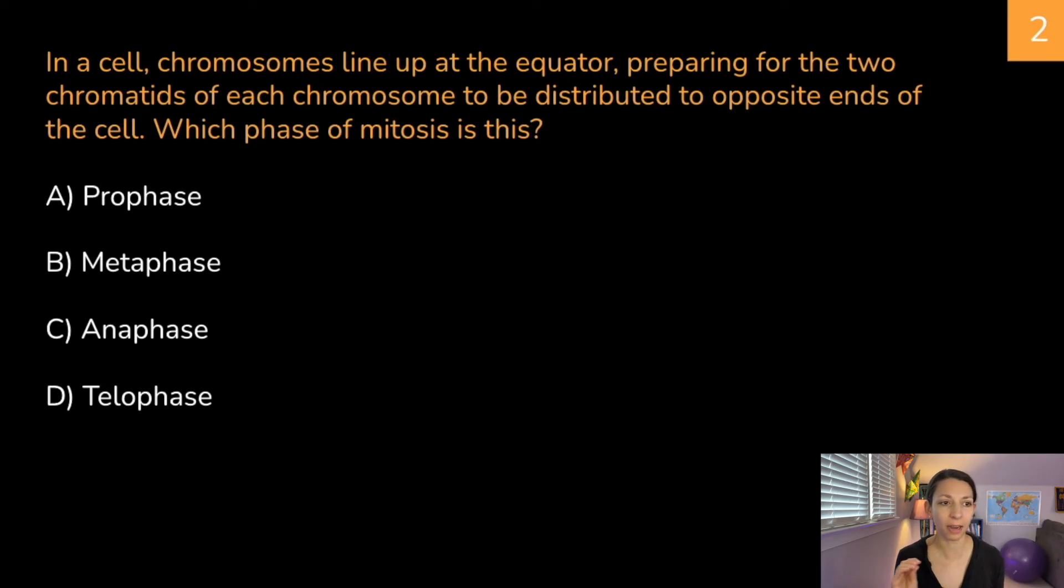In a cell, chromosomes line up at the equator preparing for the two chromatids of each chromosome to be distributed to opposite ends of the cell. Which phase of mitosis is this? A, prophase, B, metaphase, C, anaphase, or D, telophase? Think about it. Correct answer is B, metaphase. Remember, they're not being pulled apart quite yet, so we're not at anaphase. We are lining up at the equator. Those sister chromatids are preparing to be distributed, so that is metaphase.